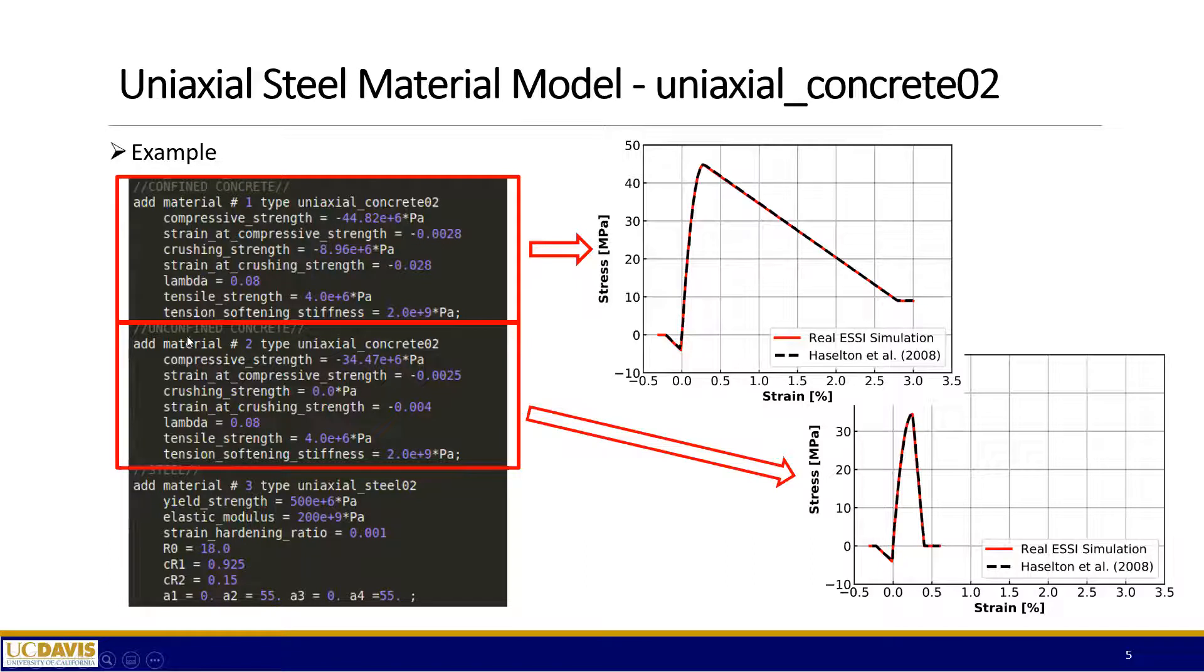Similarly, we can do the same thing for the unconfined concrete, where you put different material parameters and you get a different behavior. As you can see, we have a lower compressive strength, similar tensile stress, but much faster decay when you are on the compressive side. And also you have zero crushing strength or zero ultimate strength because the concrete itself is unconfined. So by defining different material parameters, you can simulate confined, unconfined, and a wide range of different material behaviors.